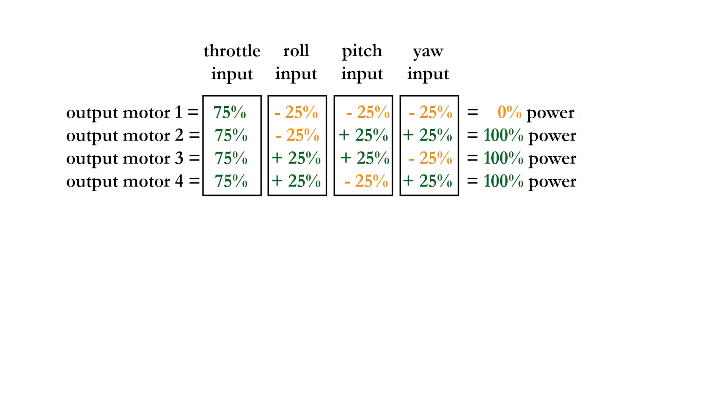In reality, you do not send a power percentage to the ESC, but rather a PWM value between 1000 and 2000 microseconds, where 1000 microseconds corresponds with 0% motor output and 2000 microseconds corresponds with 100% motor output.